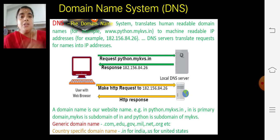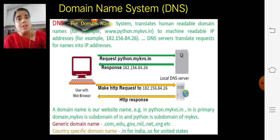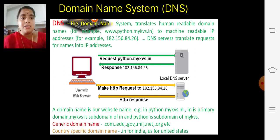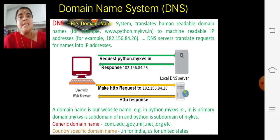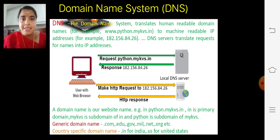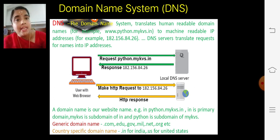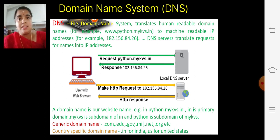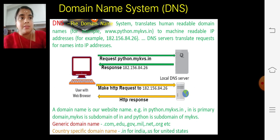Look at the generic domain names: .com means commercial purpose, .edu for educational, .gov for government, .net for network, .org for organizational. Then there are country-specific domain names: .india, .in, .us for United States — like that, we have country-specific domain names.